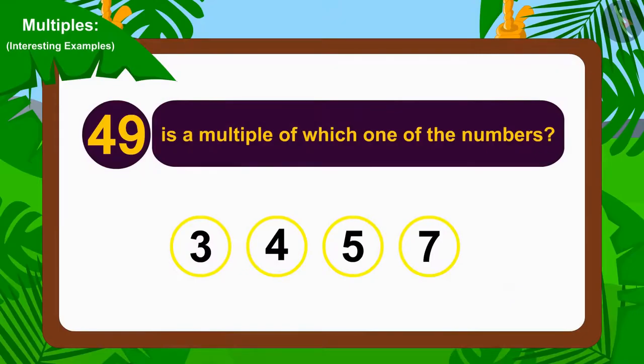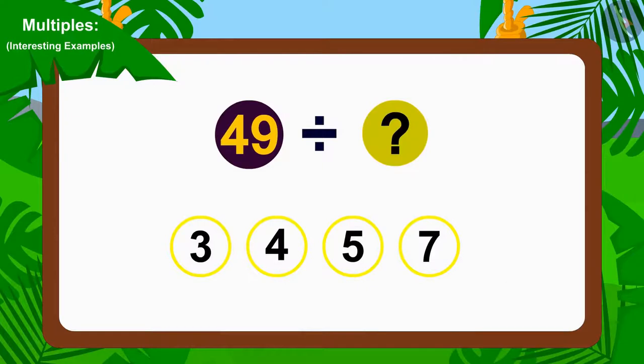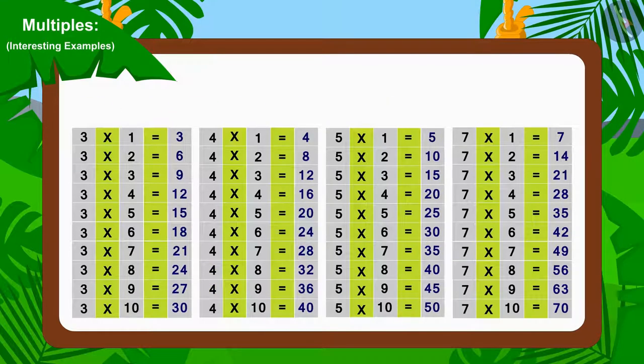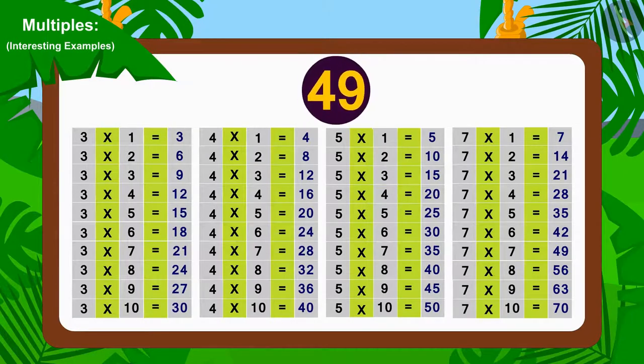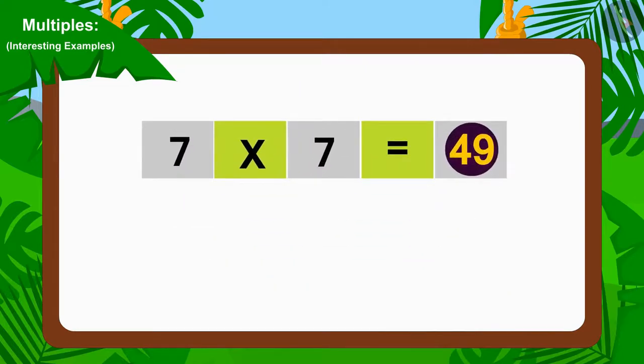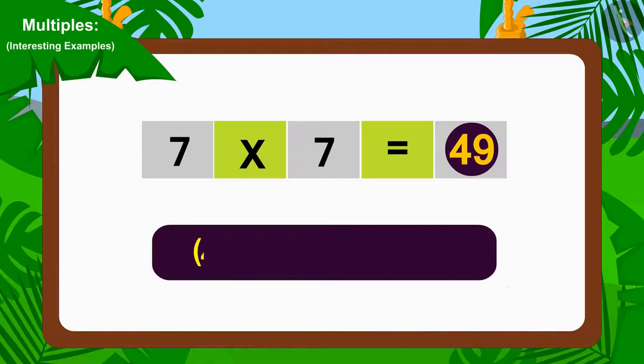Well done, children! Your answer is absolutely correct! To find 49 is a multiple of which one of these numbers, we only have to see which number it can be divided by. If we look at the multiplication table of 3, 4, 5 and 7, we will find that the number 49 can be found in the multiplication table of 7 only. So, we can say that 49 is a multiple of 7.